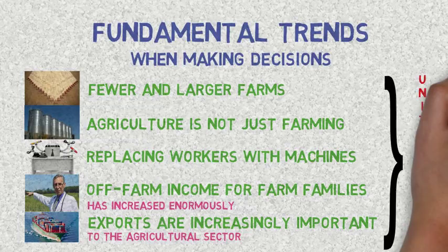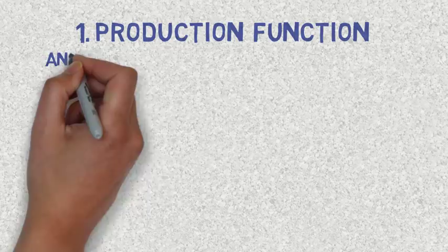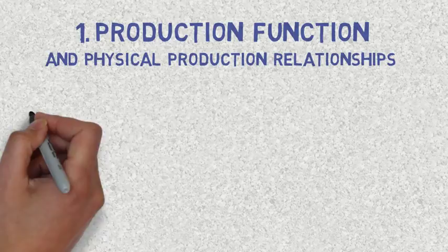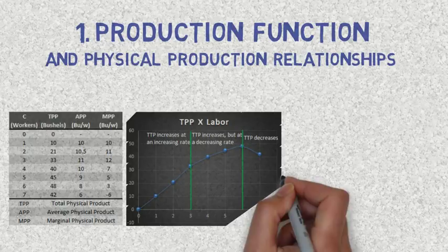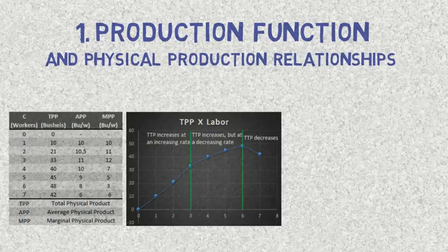In Brazil, studying the production function and some physical production relationships of a given business is essential to understand how it works. The production of corn may serve as an example. It is reasonable to imagine how the number of workers affects its production. The production, in this case, is measured in bushels for each variable of input. This is the definition of total physical product, or TPP. When a graph is used to show the relationship between the TPP and the number of workers, we can see the shape of a typical production function.